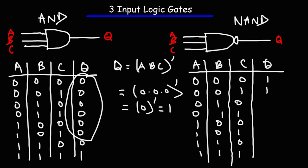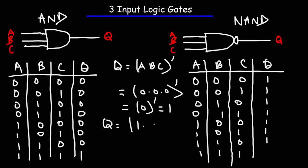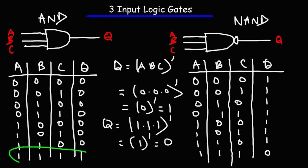So instead of having seven zeros, we're going to have seven ones. For the last row, 1 × 1 × 1 = 1, and the complement of 1 is 0 — so the output is 0. For the NAND gate, when all inputs are active the output will be inactive — it will be in its low state, or off.